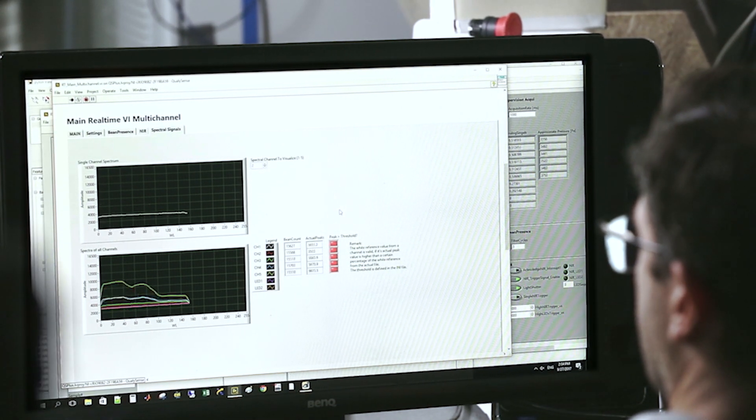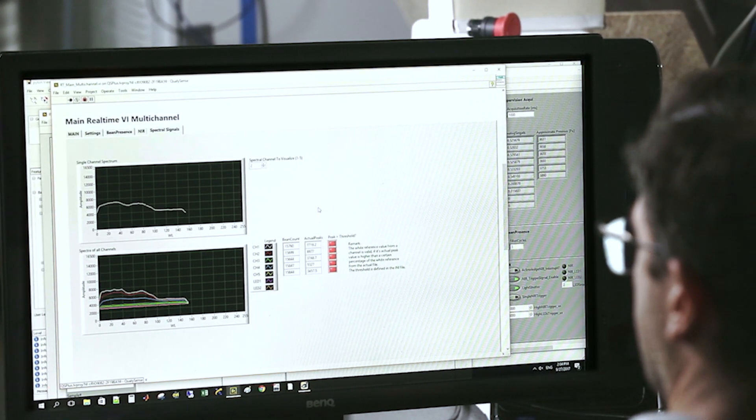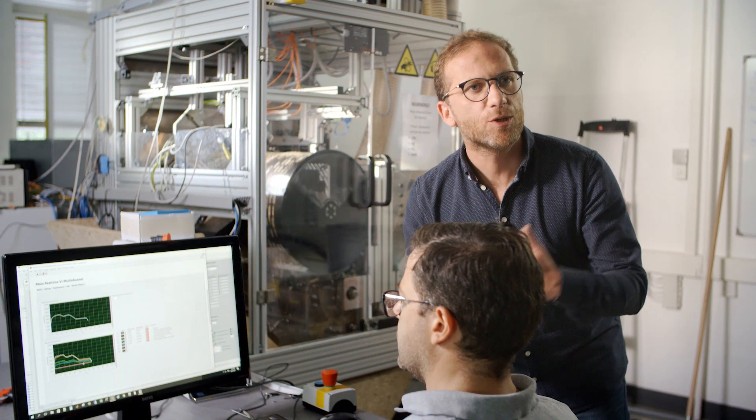But then with the spectrometer we can look inside the bean. With that we can measure the biochemical structure in terms of protein, oil content. So things that you don't see with the naked eye.